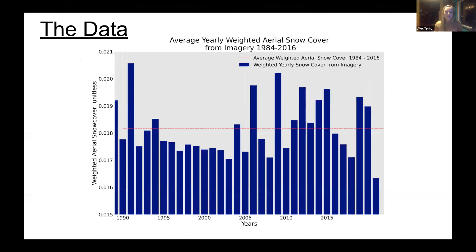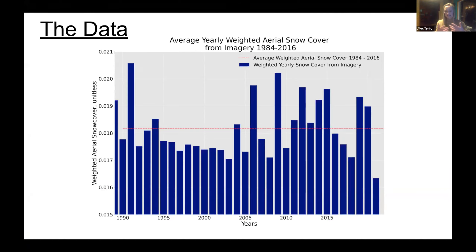Looking at the data in a time series format, this represents the weighted aerial snow covers — each year is an average of the aerial snow extents across the 10 areas that I looked at. With the purpose of trying to determine if there's been a change in the extent of aerial snow cover for these regions, visually looking at this, it kind of looks like there's been some sort of change in trend in the second half of the data set, but let's do some actual analysis to see if that assumption is true.